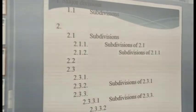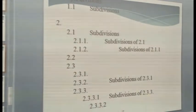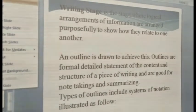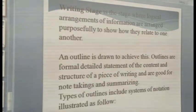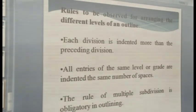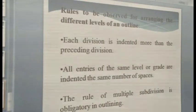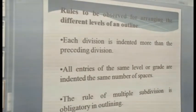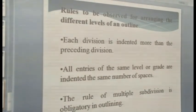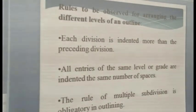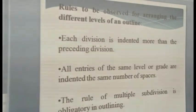Then it goes on till you get to the last of your divisions. We must note, however, that there are rules to govern the listing of these divisions. Number one: each division must be indented more than the preceding division — there is a slanting line in the numbering. Note also that all entries of the same level or grade are indented the same number of spaces.